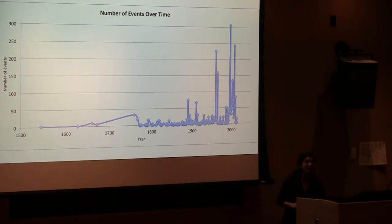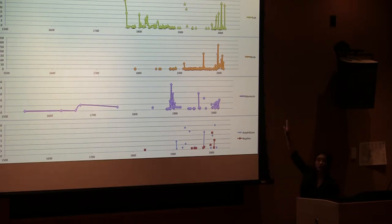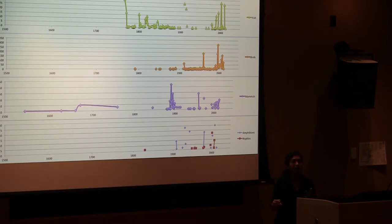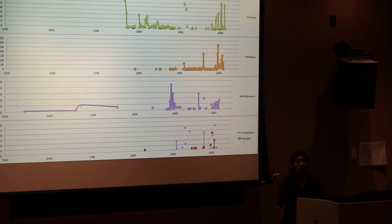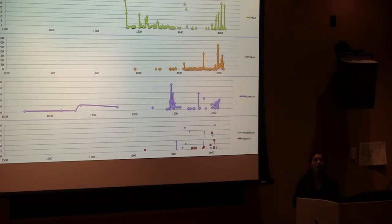The next series of graphs shows the same information differentiated by taxa, with a floating y-axis for each. From the top: fish events are significant in the 1800s and 2000s but dip low in between, coinciding with a period of over-exploitation. Bird events in orange are strong and consistent but mostly after 1900. Mammal events in purple span the full range of years studied but have significant gaps. Amphibian and reptile events are slightly underrepresented and sparse, also mostly after 1900.